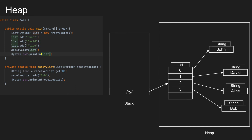When we re-enter the main function, the list variable comes into scope and you can access the list object using the list variable. System.out.println will then print the entire content of the list.